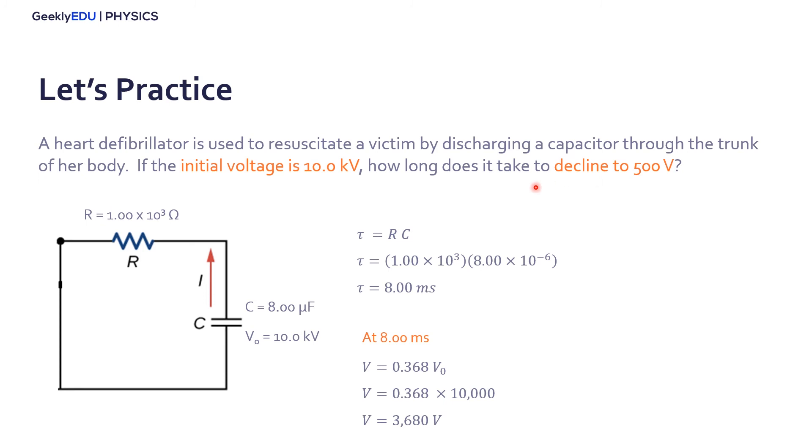We can keep going until it reaches 500 volts. After two time constants, or 16 milliseconds, our voltage will be 0.368 times the remaining voltage, which is 3680 volts. So at 16 milliseconds, the voltage will be 1354 volts. After another time constant, our voltage will be 0.368 times the remaining voltage. So it will reach 498 volts, just a little bit below 500.